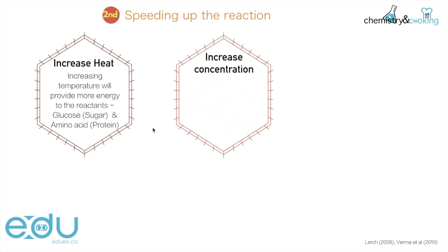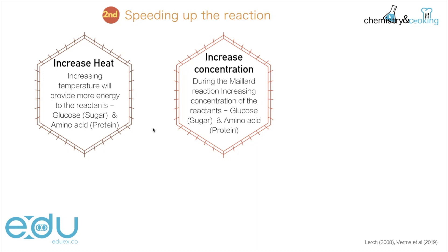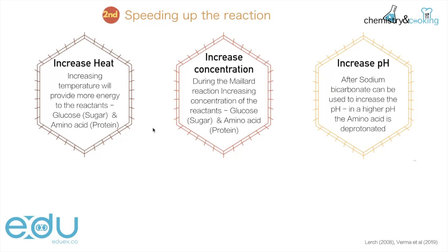We can also increase the concentration. During the Maillard reaction we have glucose and amino acids working together — the sugar and the protein — and if we increase that concentration we will also have a quicker reaction. We can also increase the pH. In this case it is very important to know the reaction mechanism, which we will come to in just a minute. If you increase the pH, in this case we would use sodium bicarbonate, and with higher pH you have the amino acids being deprotonated.